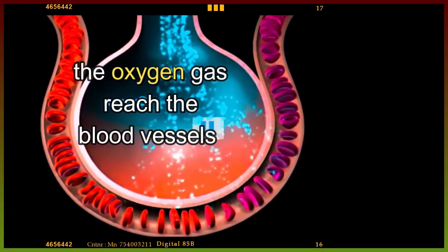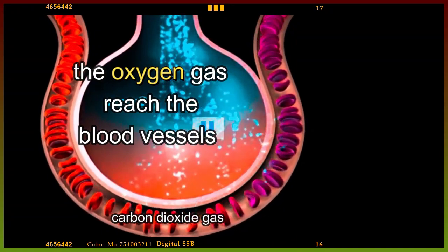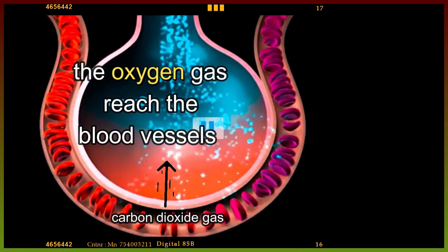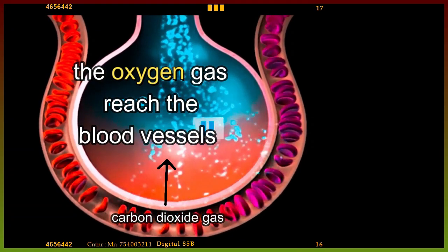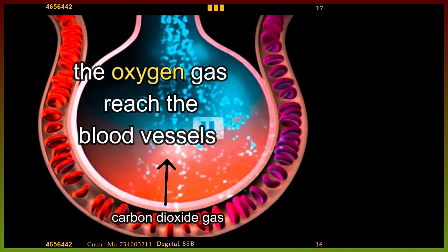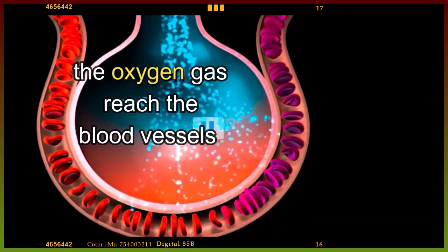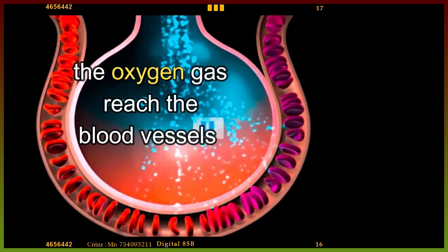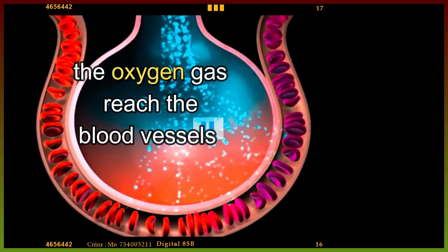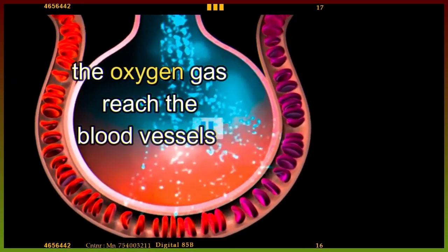Fish release carbon dioxide gas through their gills. Gills are unique structural adaptations that allow fish to live and breathe underwater.